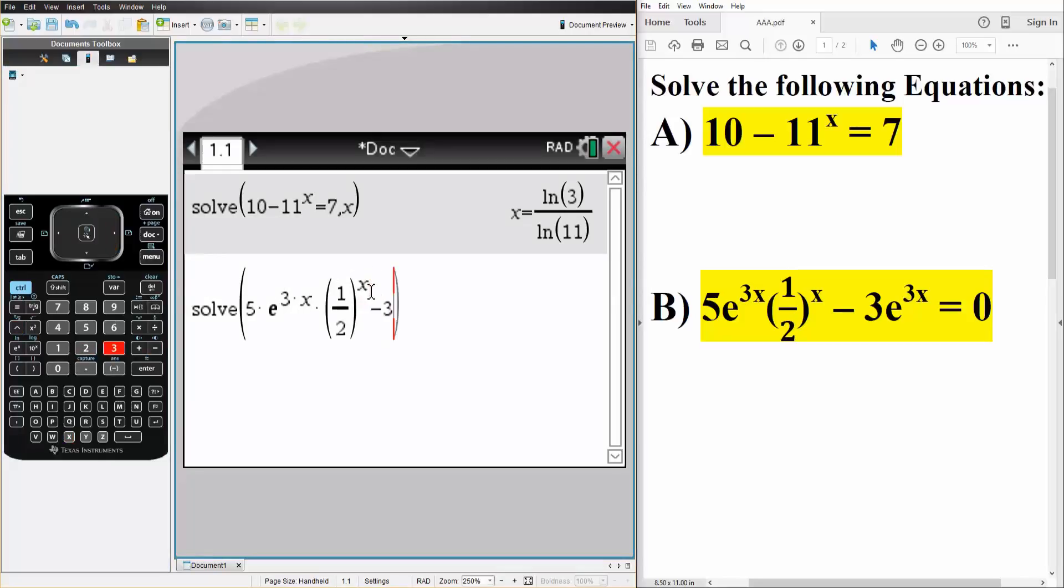minus 3 times e, times this e right here, 3 times x, and this is going to equal 0, and comma x,